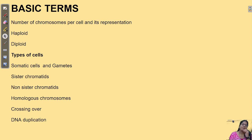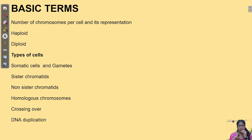So what are the basic terms before you enter into cell division? You should have a brief knowledge about the number of chromosomes present in the cell. Please remember, we all have two different types of cells in the body — somatic cells and gametes.